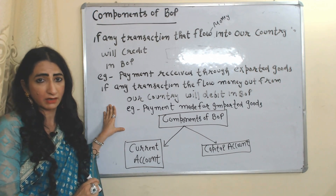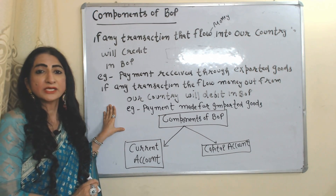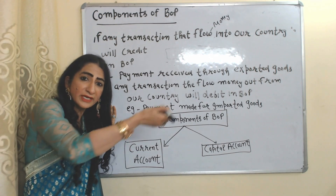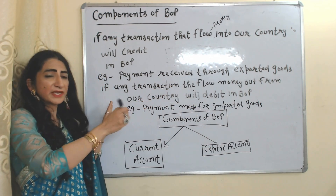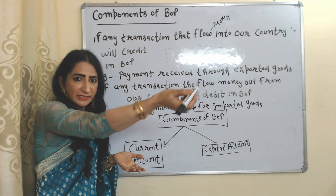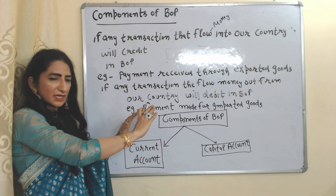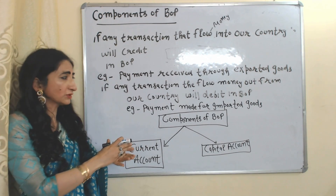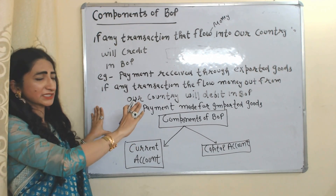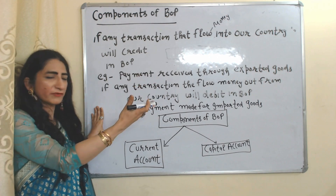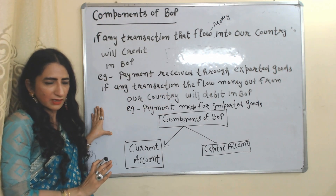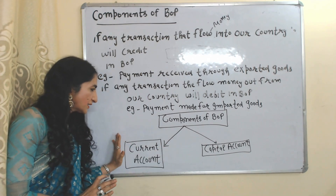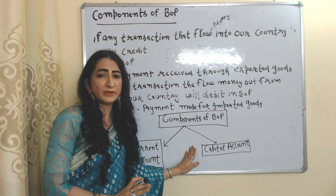On the other hand, any transaction that flows money out from our country will be debited in the Balance of Payment account. When we import goods, our money is going to another country, so payments made for imported goods are debited. Balance of Payment mainly has two components: Current Account and Capital Account.